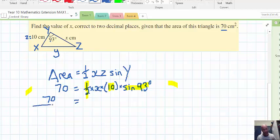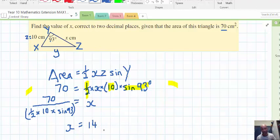And, that means we've got 70 divided by, I would suggest the use of brackets in the calculator here, a half, to keep it all together, half times 10 times sine 93 degrees. And, that will give us X. So, calculate that now. We've been asked two decimal places. So, that would be 14.02 centimeters to two decimal places.